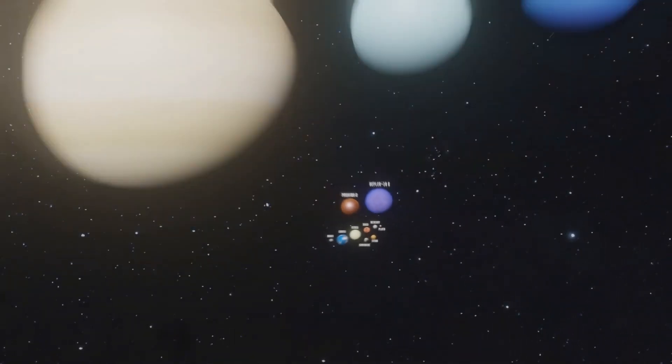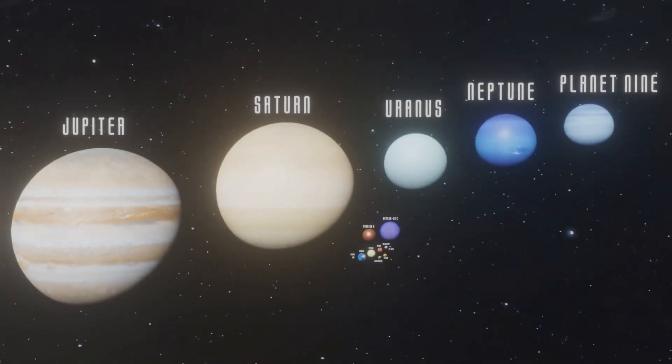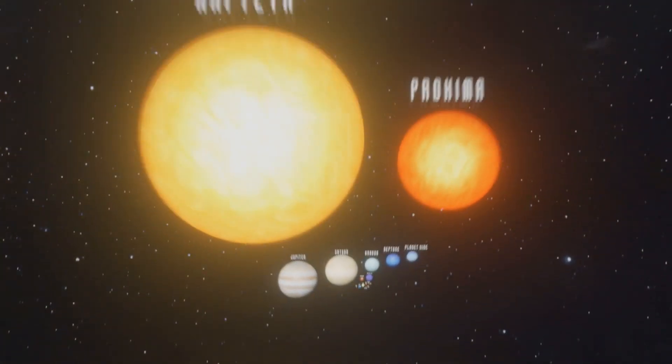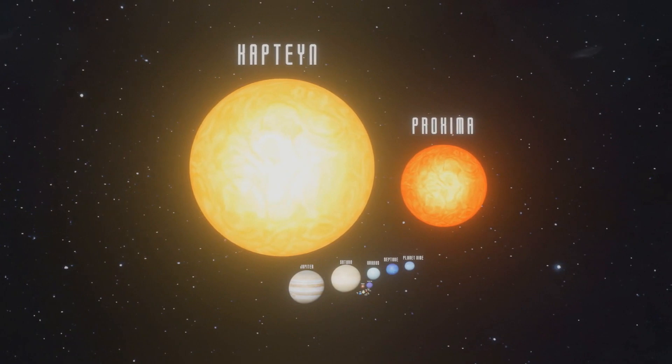Jupiter is among the largest, with a volume of over 1,000 Earths. However, even the smallest, dimmest stars, such as Proxima, are bigger.